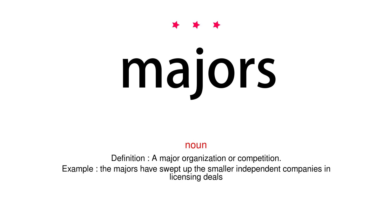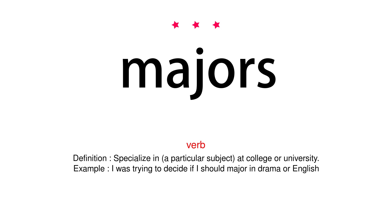Noun. Definition: A major organization or competition. Example: The majors have swept up the smaller independent companies in licensing deals. Verb. Definition: Specialize in a particular subject at college or university. Example: I was trying to decide if I should major in drama or English.